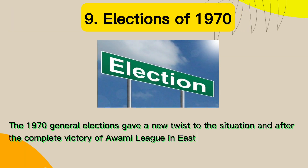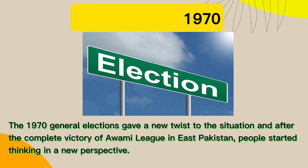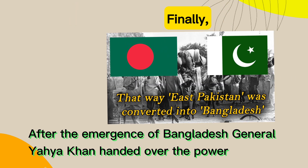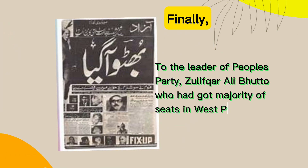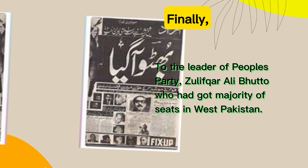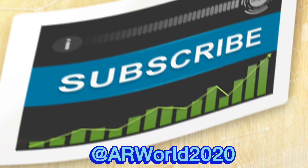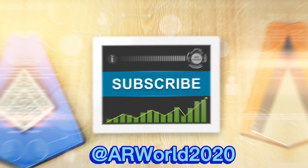9. Elections of 1970. The 1970 general elections gave a new twist to the situation, and after the complete victory of Awami League in East Pakistan, people started thinking in a new perspective. After the emergence of Bangladesh, General Yahya Khan handed over power to the leader of People's Party, Zulfikar Ali Bhutto, who had got the majority of seats in West Pakistan. Thanks for watching. Subscribe to the channel and press the bell icon for the latest updates.